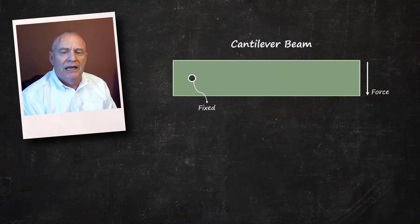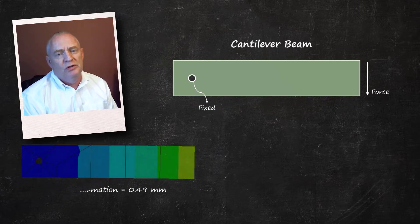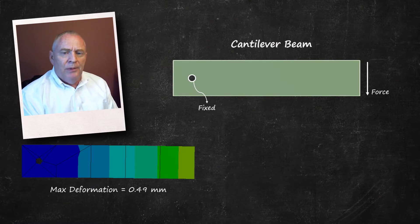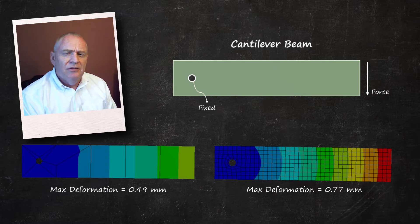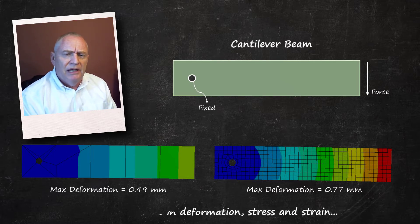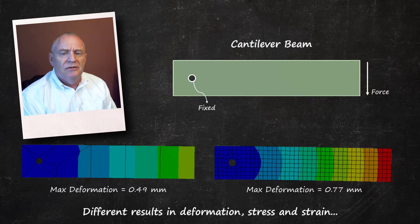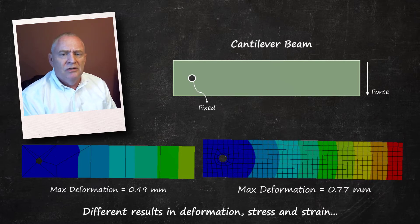Let's look at this very simple cantilever beam problem. The solver can generate a solution with only one element across the thickness, like this. Or the problem can be solved with many elements, like this. Both of these cases are successfully solved. However, clearly the results — for example the deformation, the stress, and the strain — from these two sets of results are very different. We might intuitively recognize that the results with more elements should be more accurate.